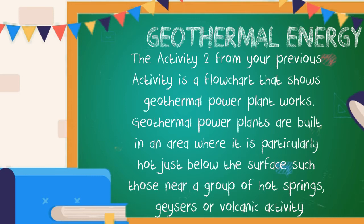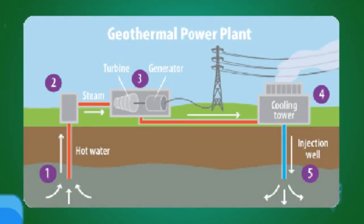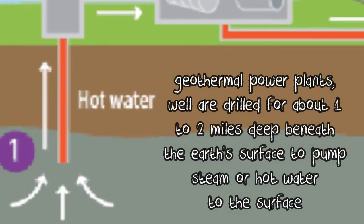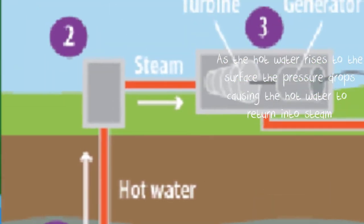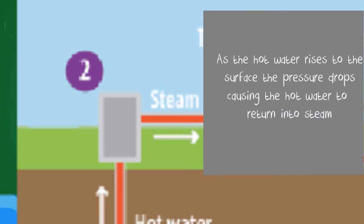The flow chart from Activity 2 shows how a geothermal power plant works. Geothermal power plants are built in areas where it is particularly hot just below the surface — such as near hot springs, geysers, or volcanic activity. In geothermal power plants, wells are drilled about 1 to 2 miles deep beneath the earth's surface to pump steam or hot water to the surface. As the hot water rises, pressure drops, causing it to turn into steam.